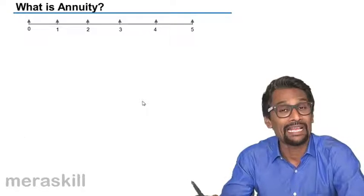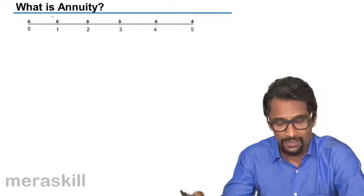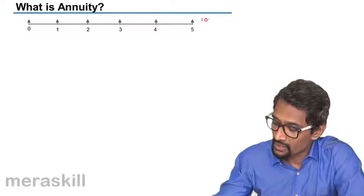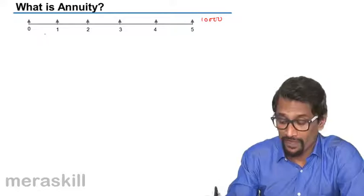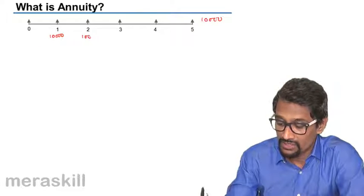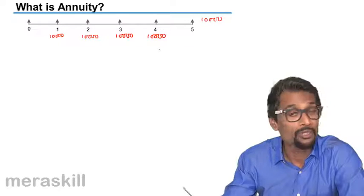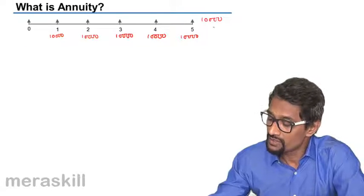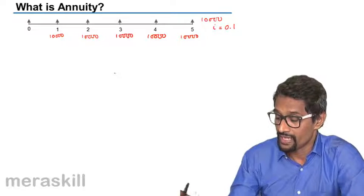Coming back to what is annuity: annuity is an annual payment that you make. Suppose you are depositing ten thousand rupees at the end of every year — depositing ten thousand rupees at the end of year one, year two, year three, year four, and year five as well. Suppose the rate of interest is ten percent, which is 0.1.